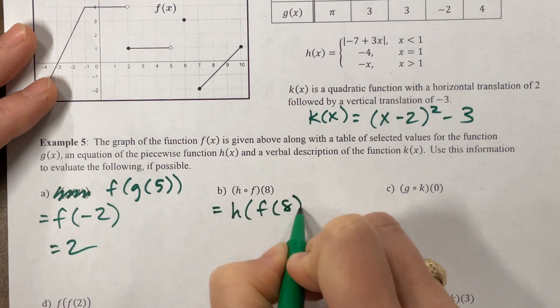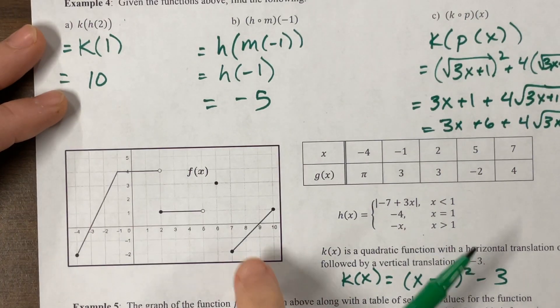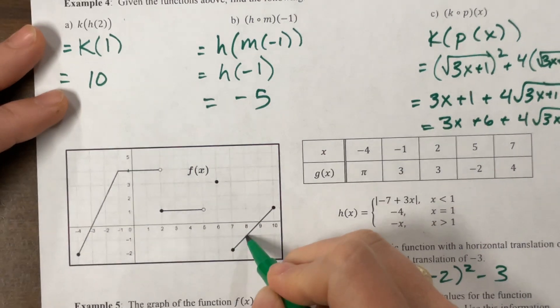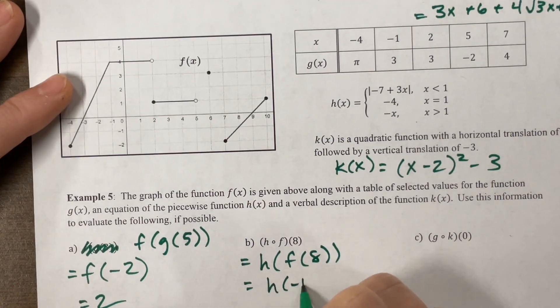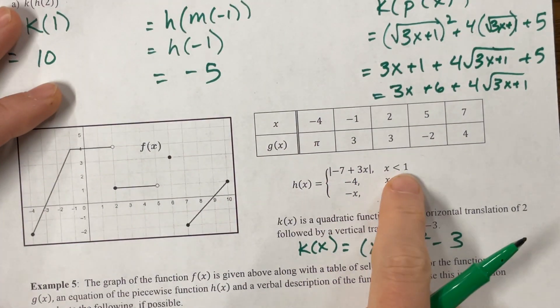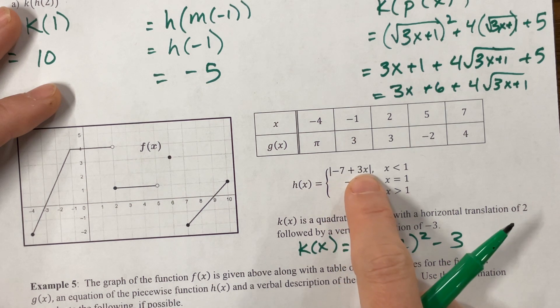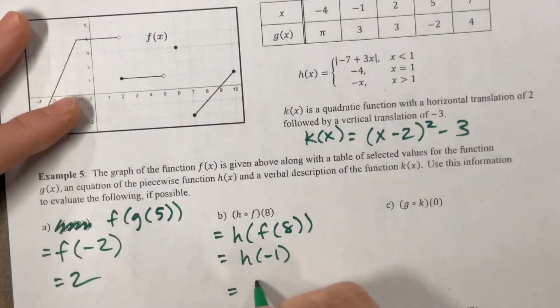H of f of 8. F of 8. I have to look back up here. That's at negative 1. So this will be equal to h of negative 1. H is this. When I'm less than positive 1, I use this equation. So I have negative 7 plus negative 3 is negative 10. Take the absolute value of that. So this will be equal to 10.